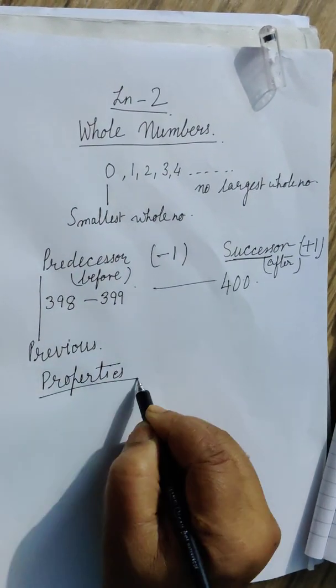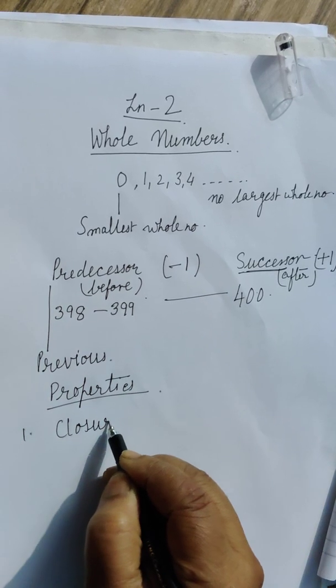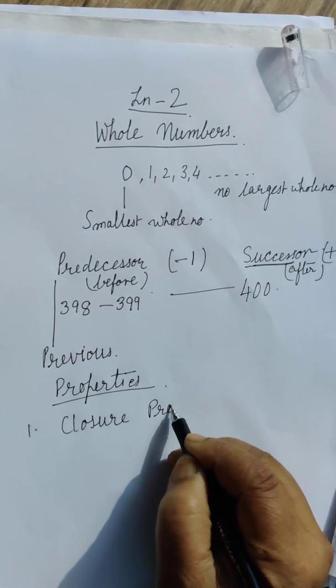subtraction, multiplication, and division. The first property is closure property.